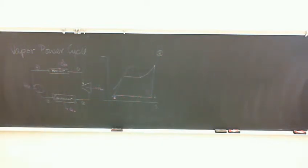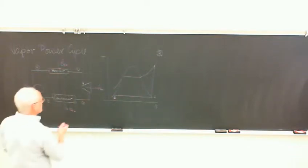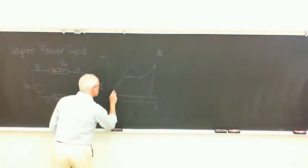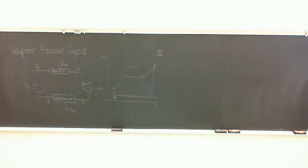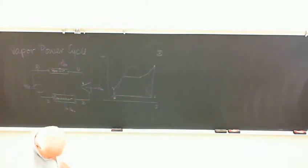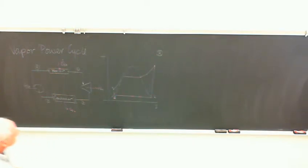At that point we go back into a pump that brings it back up to the boiler pressure and start again. Of course that takes a little bit of the work produced, but as we'll see it takes very, very little of it. We're going to assume that's isentropic up to point four. So that's our simplest of all power cycles — we'll look at ideal ones and analyze a couple as we have time.